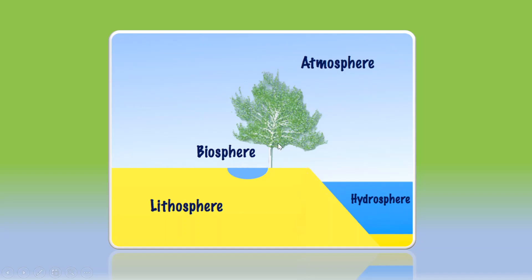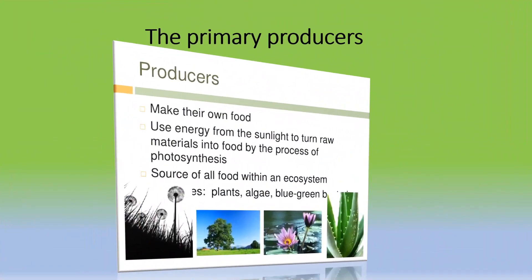The Sun is the ultimate source of heat and energy for all living beings. This energy flows from one trophic level to another through a food chain. A trophic level of an organism is the position it occupies in a food web.